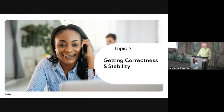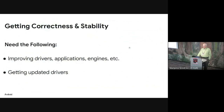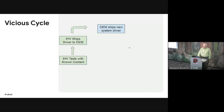Correctness and stability — bugs. People complain about buggy drivers, but there are also bugs in applications and software. How do we get to correctness and stability? We want to improve drivers, applications, and engines. We want to get updated drivers. Internally we've observed a vicious cycle: an IHV ships new hardware and a driver, tests the best they can — there are 4 million Vulkan CTS tests — ships to the SOC provider and OEMs, the OEM ships the phone, and then you try your app and find bugs.